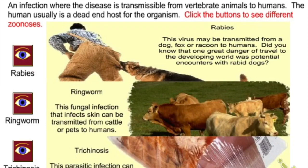Zoonosis means an infection transmissible from vertebrate animals to humans. Examples include rabies from a dog bite, ringworm from contact with animals, or Trichinella spiralis from eating insufficiently cooked pork containing encysted larvae.